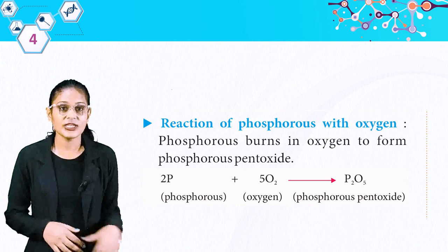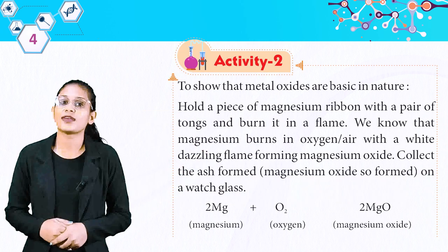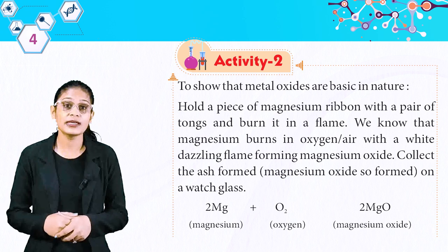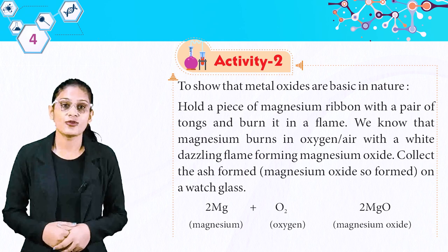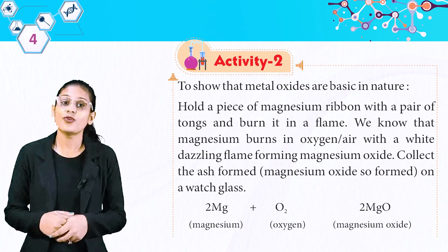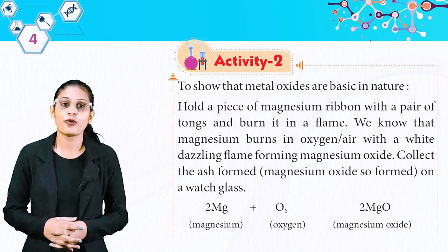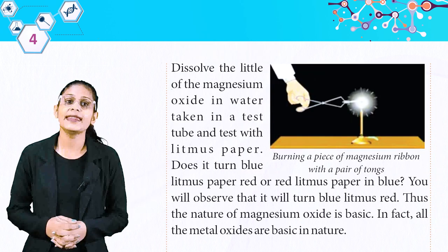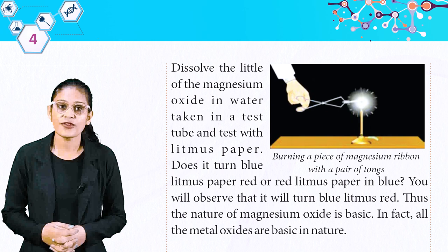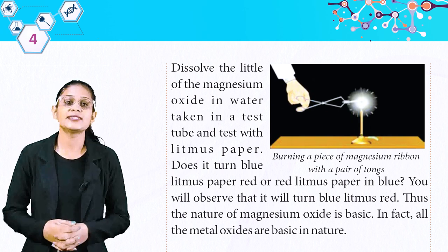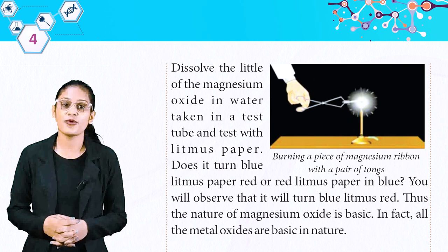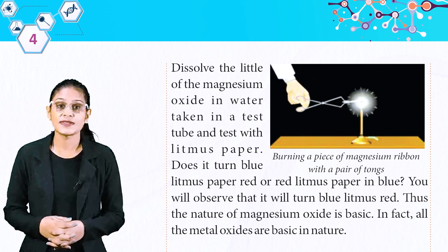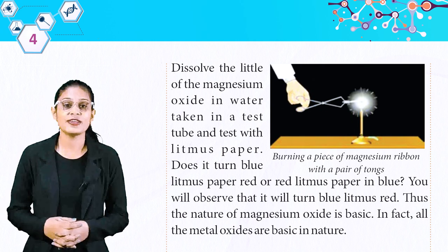Activity 2: To show that metal oxides are basic in nature. Hold a piece of magnesium ribbon with a pair of tongs and burn it in a flame. Magnesium burns in oxygen/air with a white dazzling flame forming magnesium oxide. Collect the magnesium oxide so formed on a watch glass. Dissolve a little of the magnesium oxide in water in a test tube and test with litmus paper. You will observe that it turns red litmus paper blue. Thus the nature of magnesium oxide is basic.